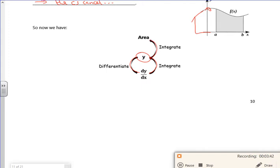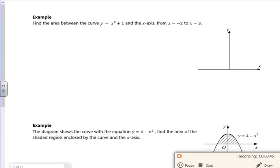Right, let's have a look at this then. So it says find the area between the curve y equals x squared plus 1. So x squared plus 1 looks like that going through 1 from minus 2 to plus 3 there.